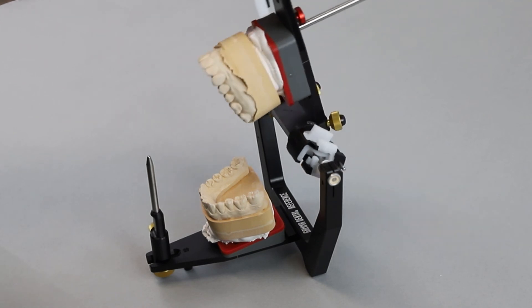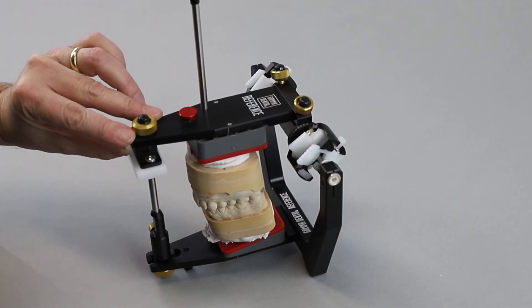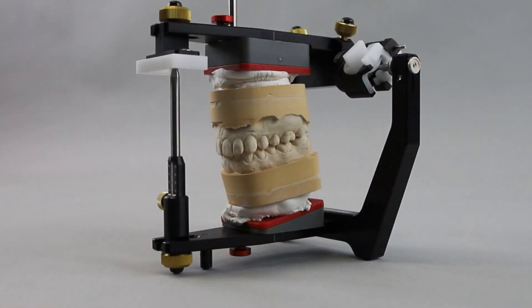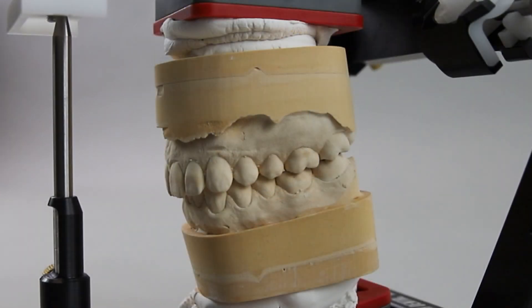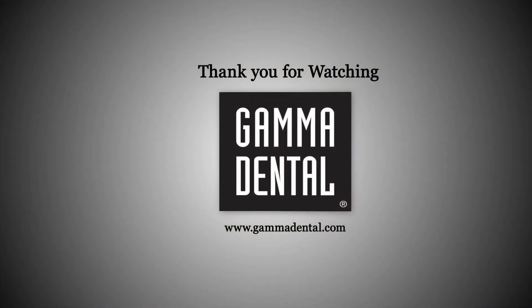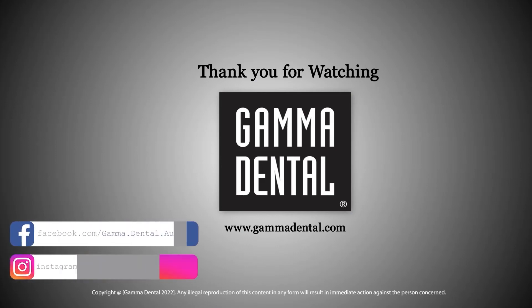Now the transfer of the upper jaw and lower jaw model according to the anatomic axis into the reference SL articulator is completed. We hope that our tips were useful. If you have any questions, please write us an email or ask your local distributor. We hope you continue to enjoy working with Gamma products. Thank you for watching.